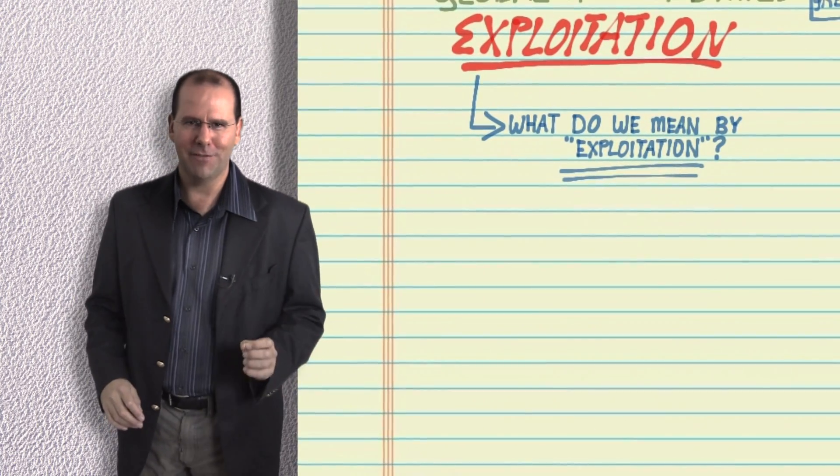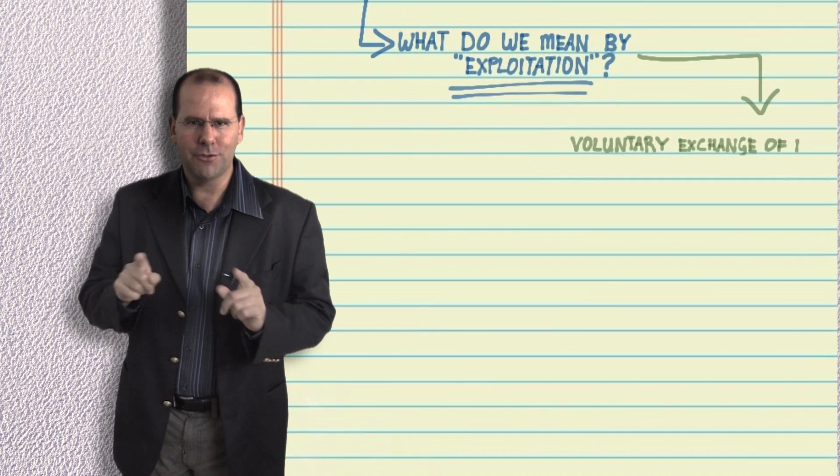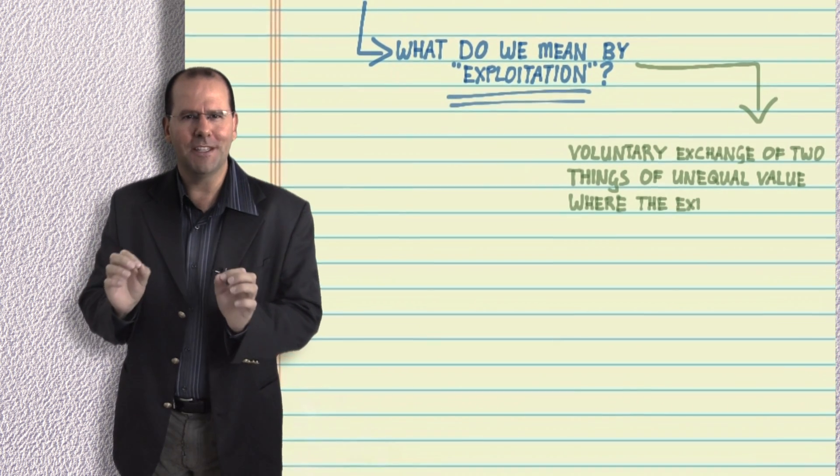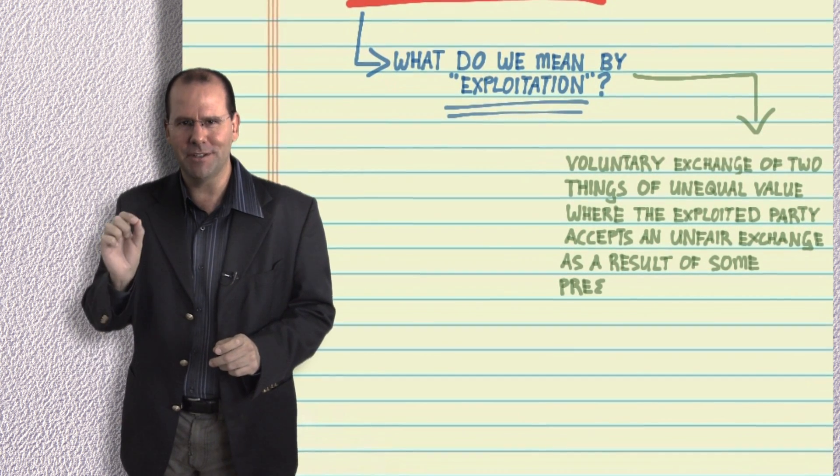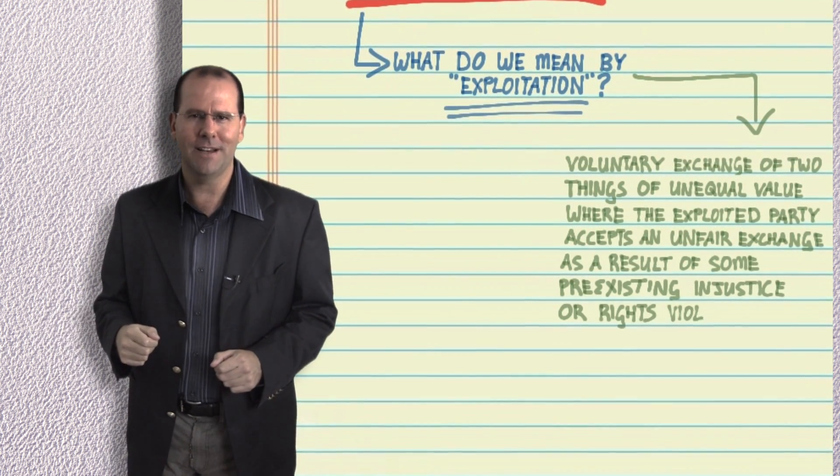A simple definition of exploitation is this: It's the voluntary exchange of two things of unequal value where the exploited party voluntarily accepts an unfair exchange as a result of some pre-existing injustice or rights violation.